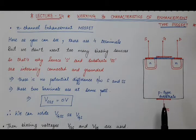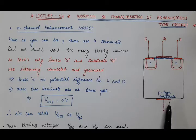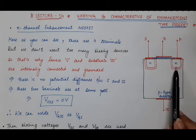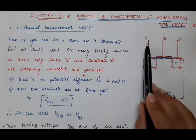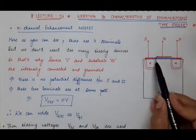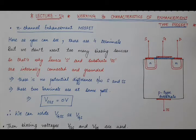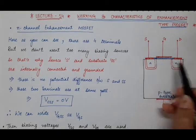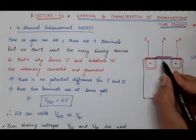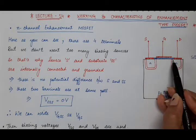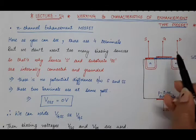Here I have again taken this N-channel enhancement type MOSFET where we have used P-type material as a substrate, over which with the help of diffusion we have diffused two N-type regions. Out of these two regions, one will act as source and the other will act as drain. Then a very thin layer of silicon dioxide, which acts as a dielectric between the parallel plate capacitor formed by gate and substrate, is developed over the surface of this P-type substrate.